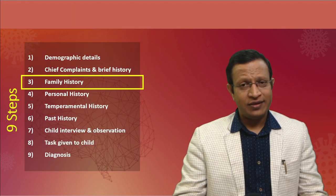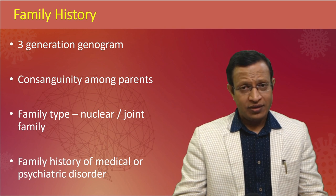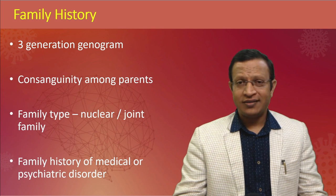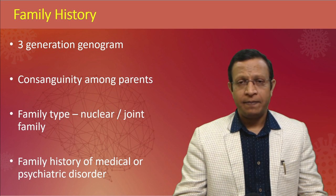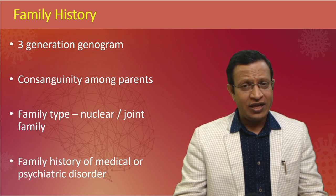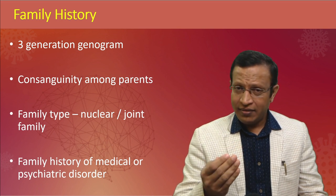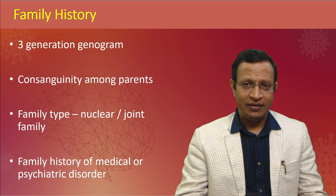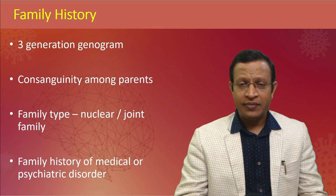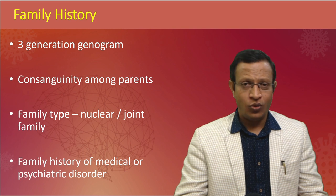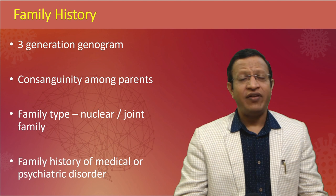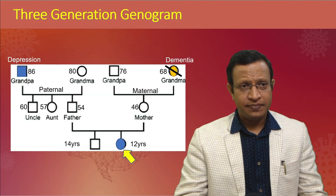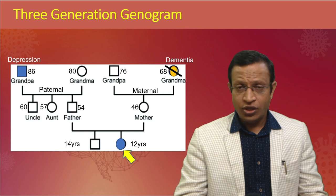Moving to the third domain — family history. Please remember the child is the mirror of family functioning, and the environment in which the child is manifesting symptoms must be studied properly. Taking family history is also an opportunity to understand the family, build rapport, and identify who the decision-makers are and what child-rearing practices are in place. A three-generation genogram is very essential. Check for consanguinity, type of family, and any family history of medical or psychiatric illness.